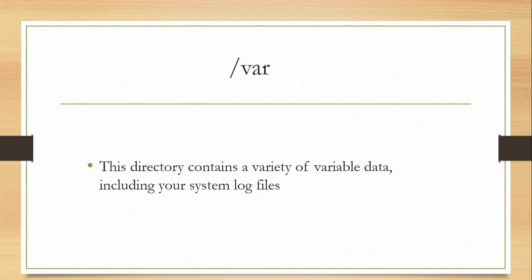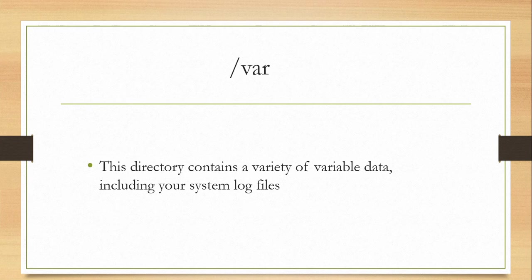Next we have slash var. This directory contains the variable data — all the files that keep on changing on every run of a service are present in the var directory. One example of these kinds of files is log files. Every time you run a service, logs are generated dynamically, and since they are variable data, they are placed inside the slash var directory.